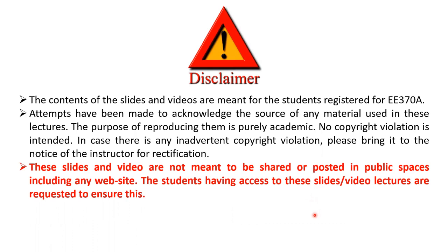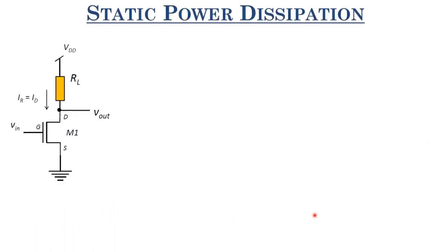In the power dissipation discussion, let us first look at static power dissipation. What exactly is static power dissipation? We discussed it in the previous lectures as well. Static power dissipation occurs when your output is static, or fixed at logic level high or logic level low. I will be giving a generalized expression which could be extended for this circuit.